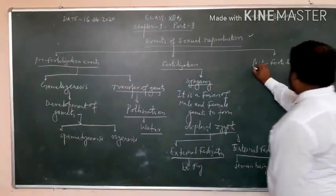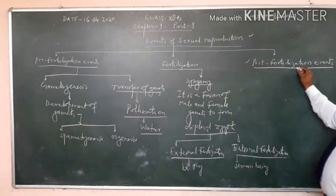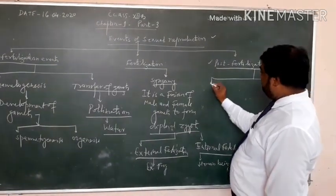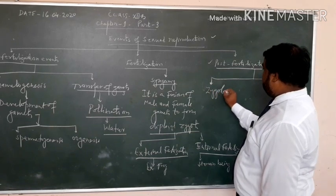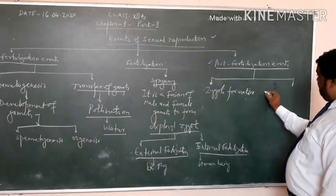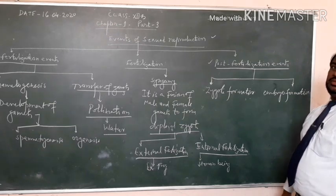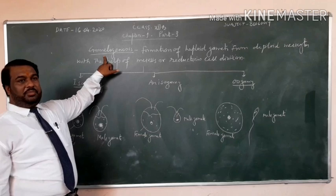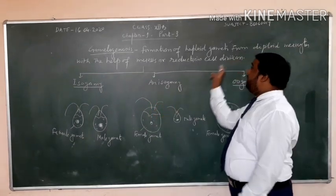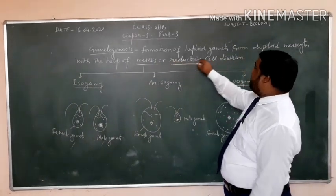Now last part is fertilization. This is a post-fertilization event. And in this section two events are occurred. One is zygote formation and another is embryo formation. Embryo formation. Now friends, about gametogenesis.